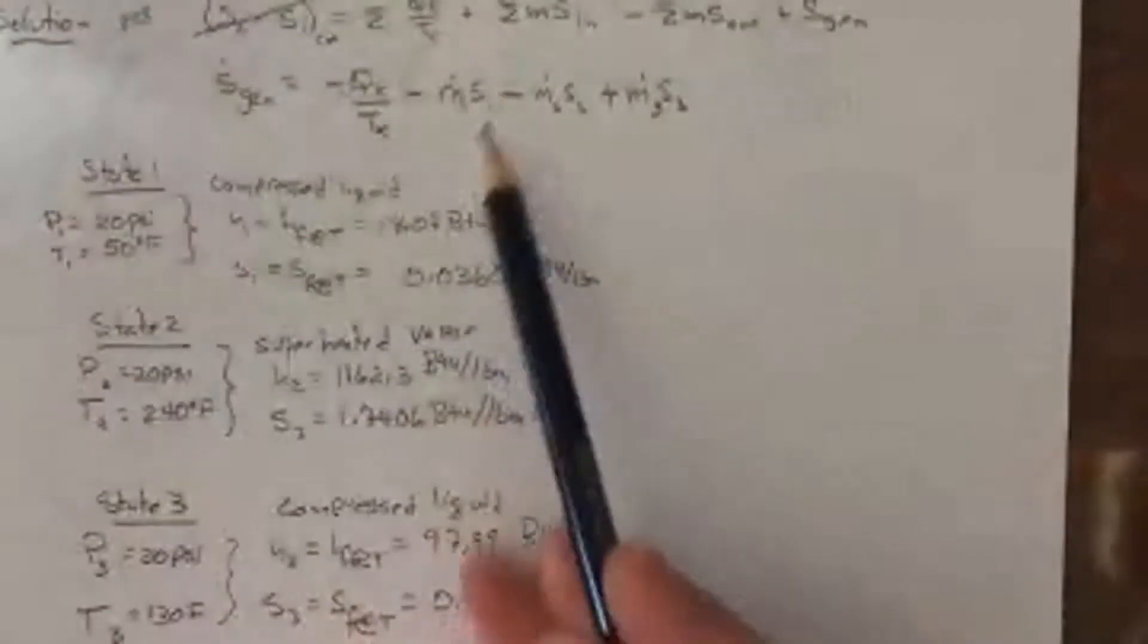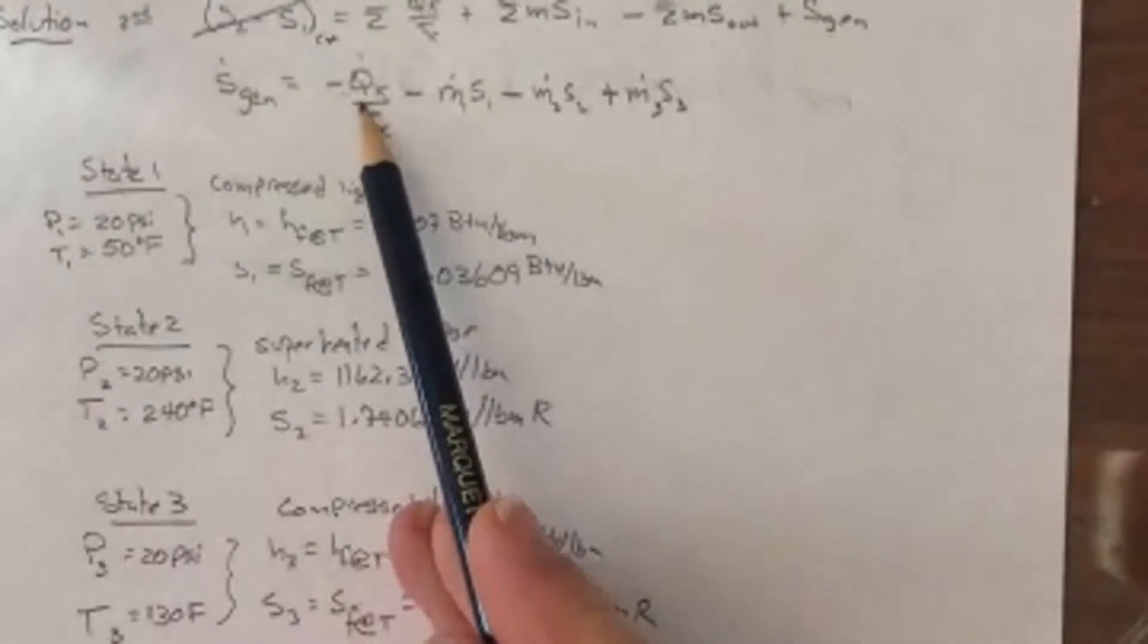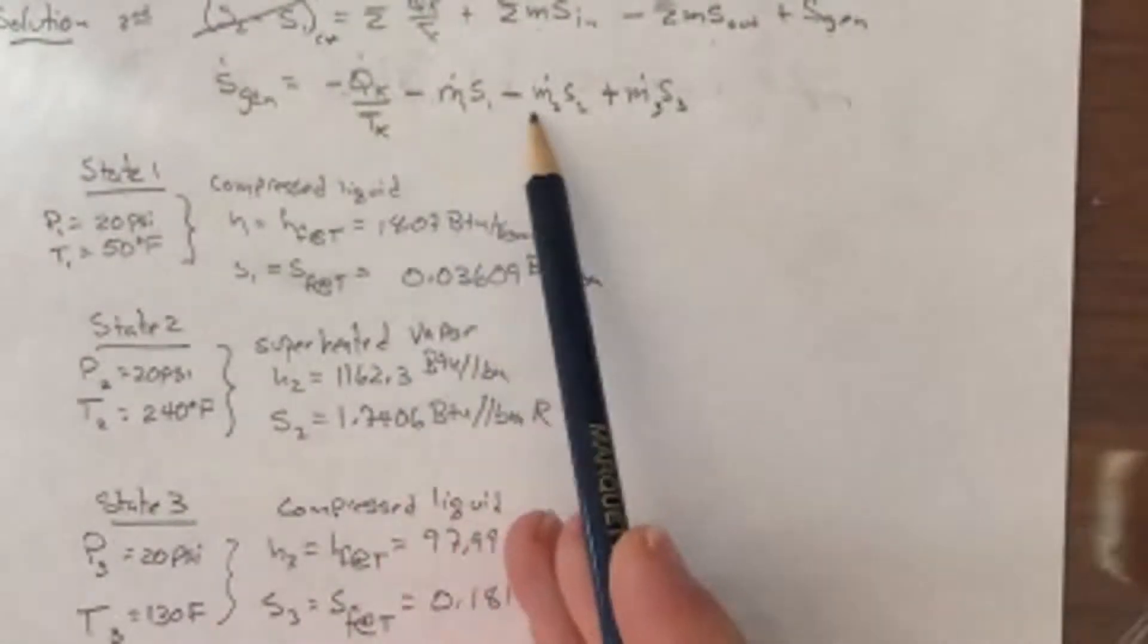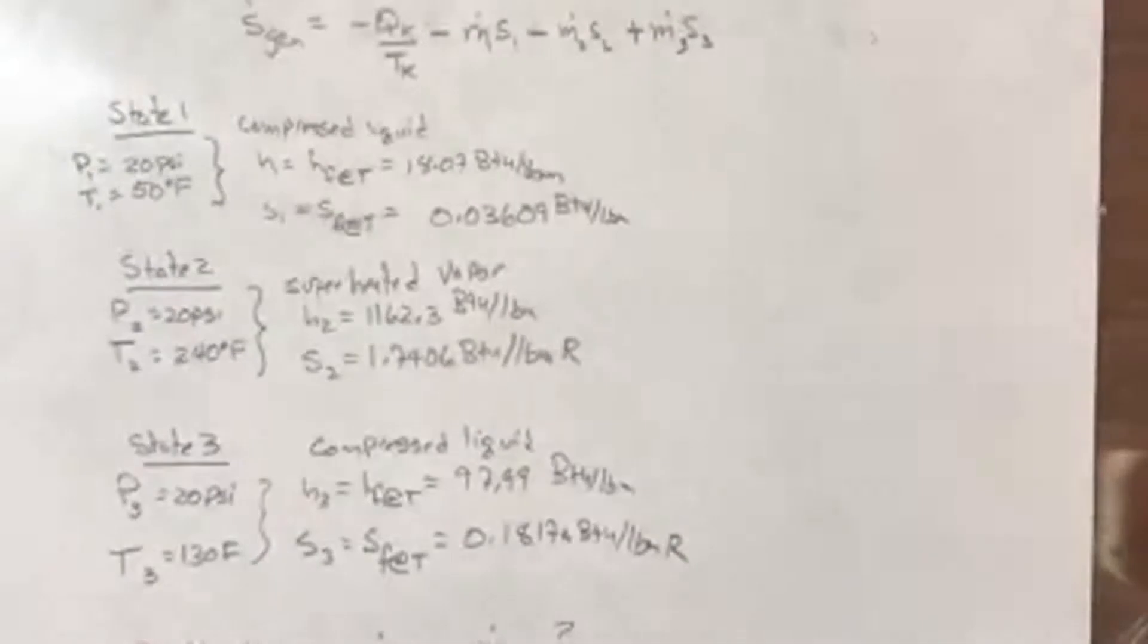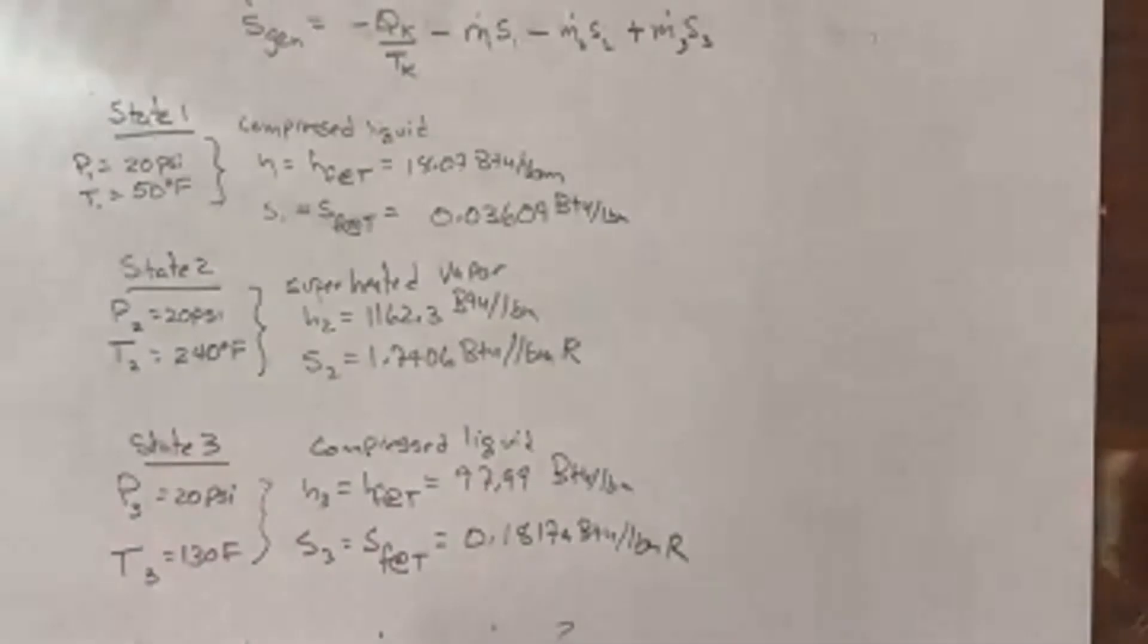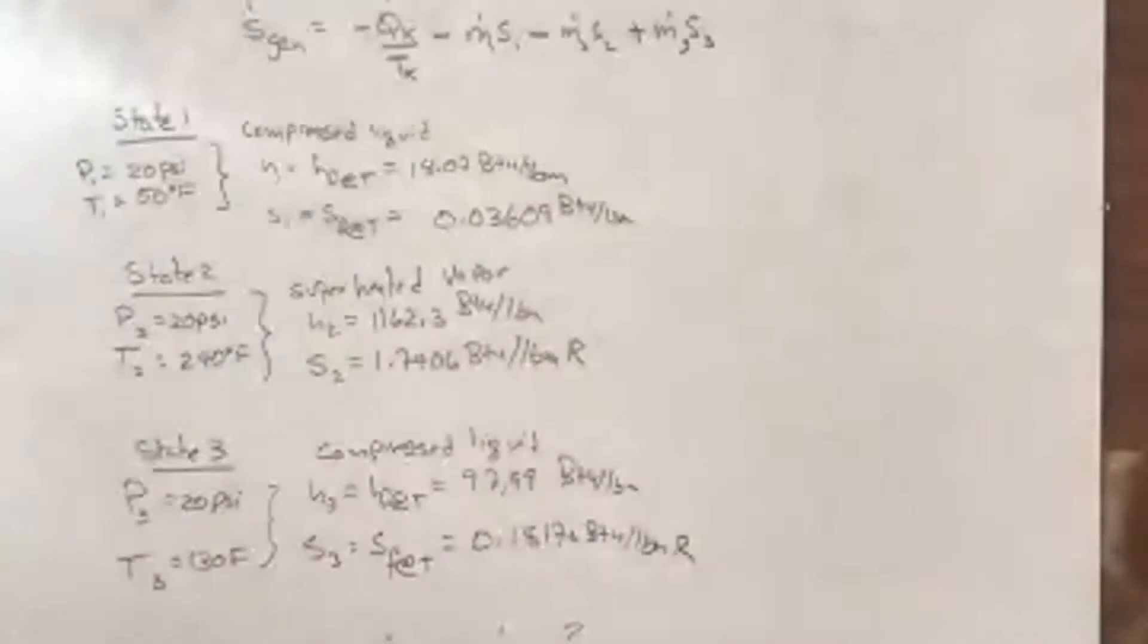So if I look at this, I was given M dot one up here. I've obtained, I was given this stuff. I don't know M dot two or M dot three. So I still have something to do here. So what would you do next? I still have three unknowns: M dot two, M dot three, and S gen.